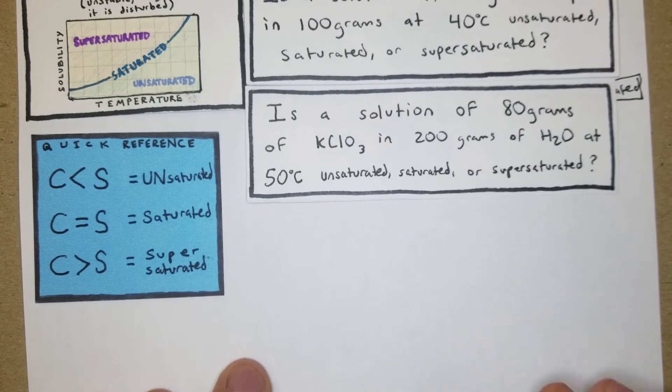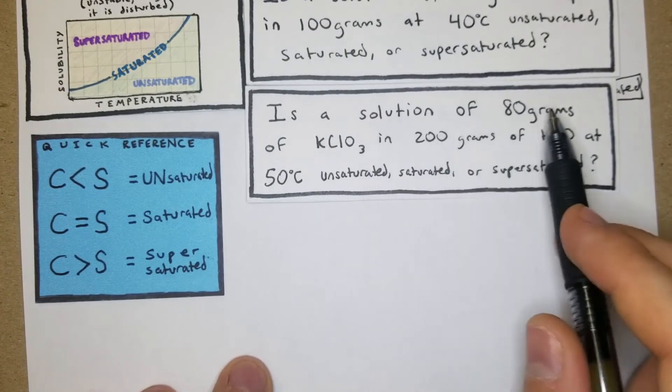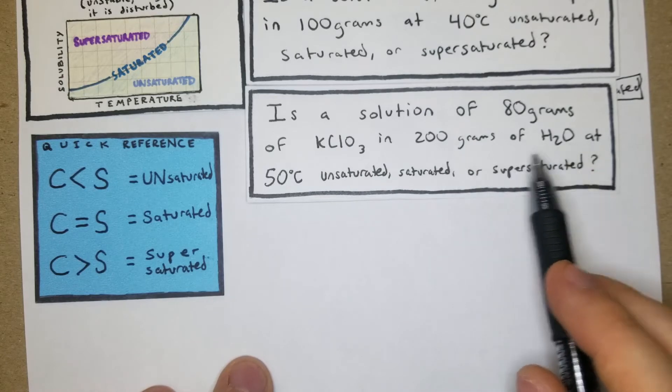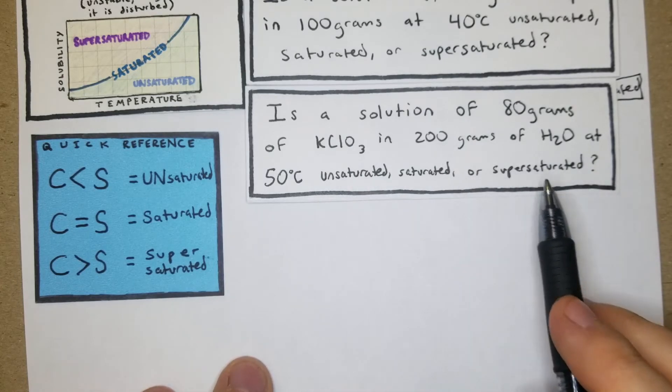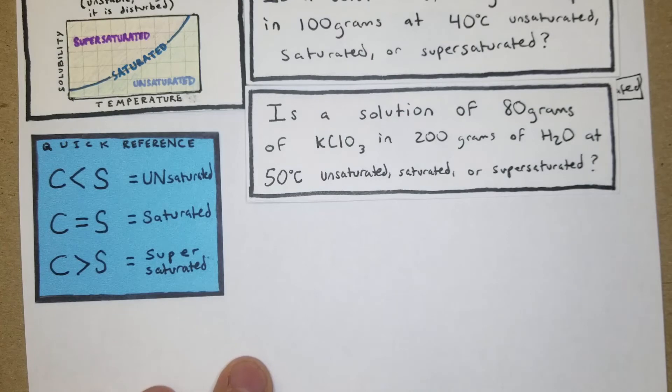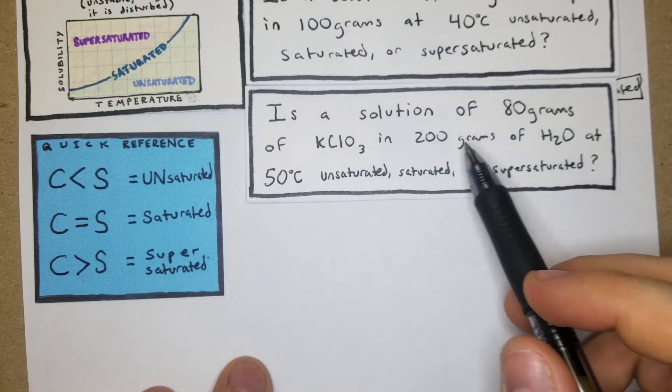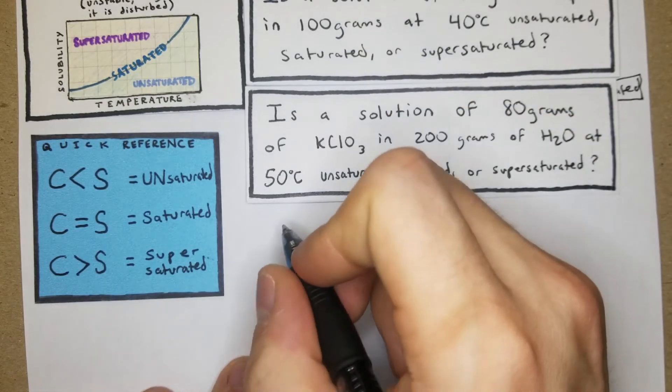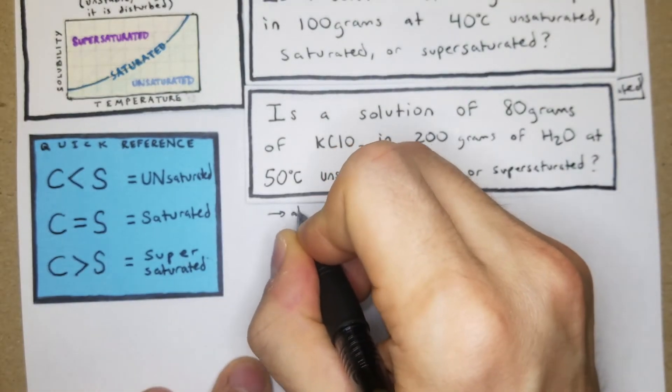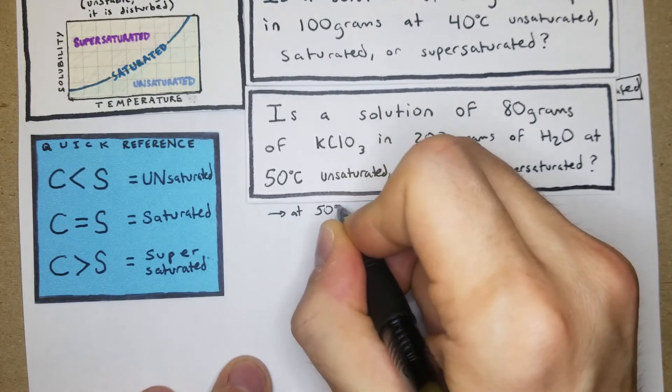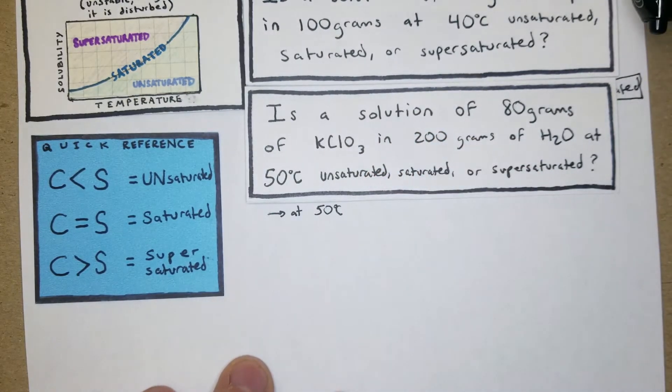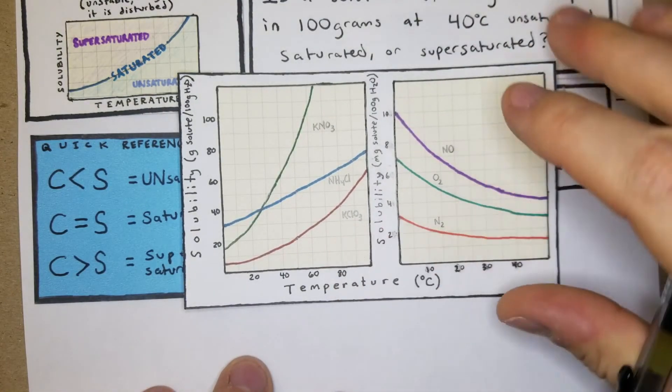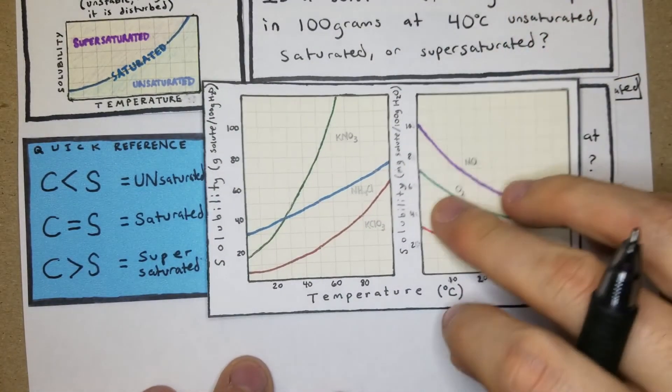Is a solution of 80 grams of KClO3 in 200 grams of water at 50 degrees Celsius? In this case it's also kind of nice because we have 200 grams of water, which is double whatever the chart's going to tell us. At 50 degrees Celsius, we're looking at KClO3.